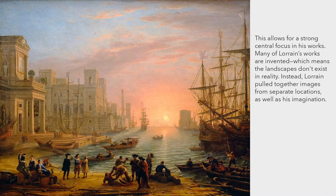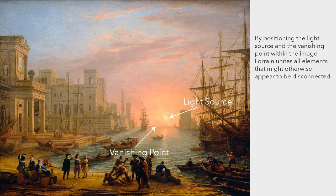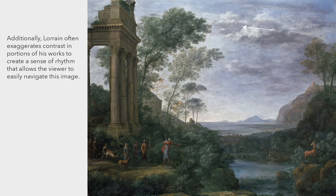Many of Lorraine's works are invented, meaning the landscapes don't exist in reality. Lorraine pulled together images from separate locations as well as his imagination. By positioning the light source and the vanishing point within the image, Lorraine unites all elements that might otherwise appear to be disconnected. Additionally, Lorraine often exaggerates contrast in portions of his works to create a sense of rhythm that allows the viewer to easily navigate the image.